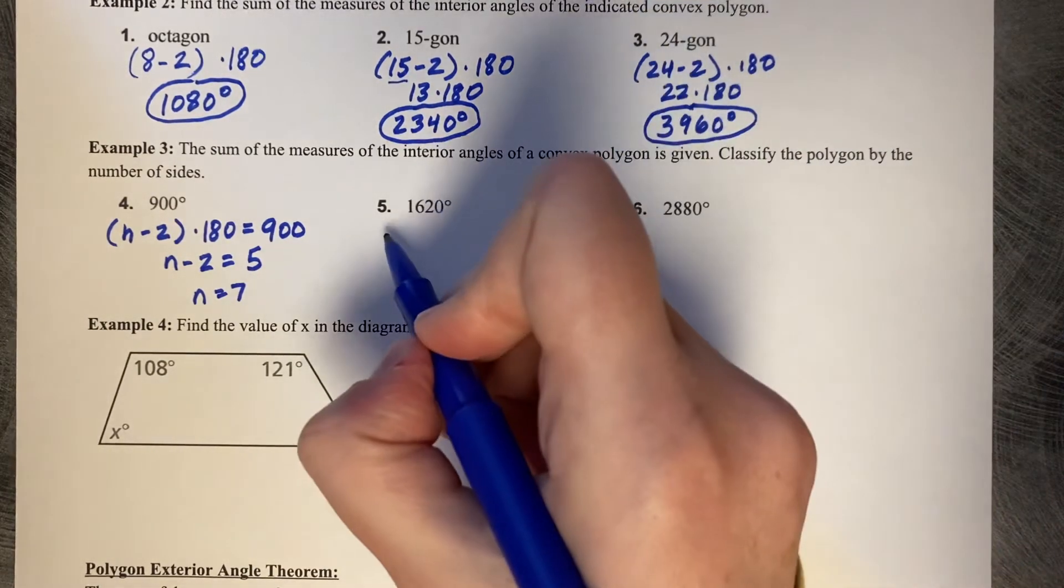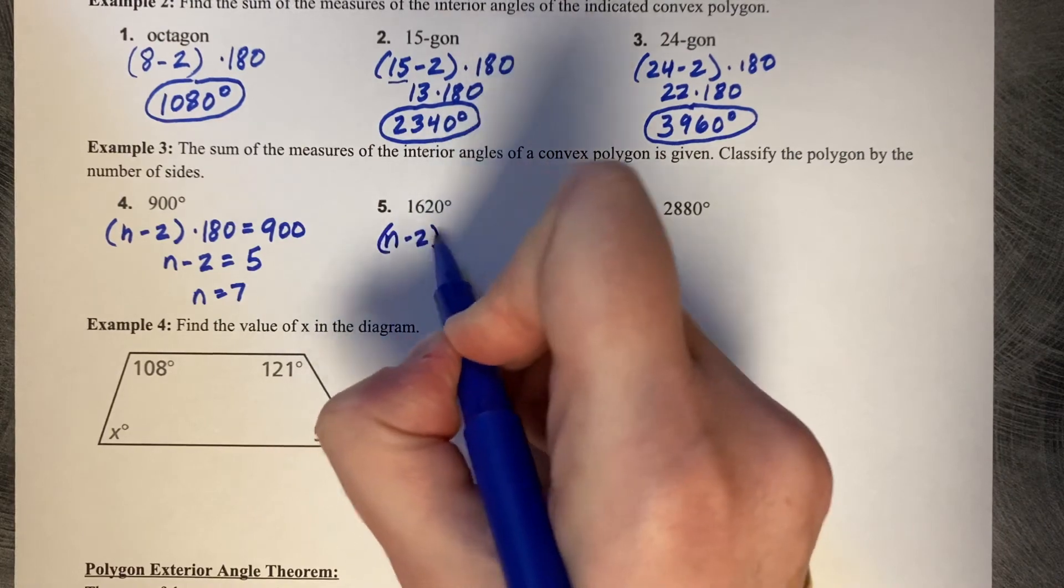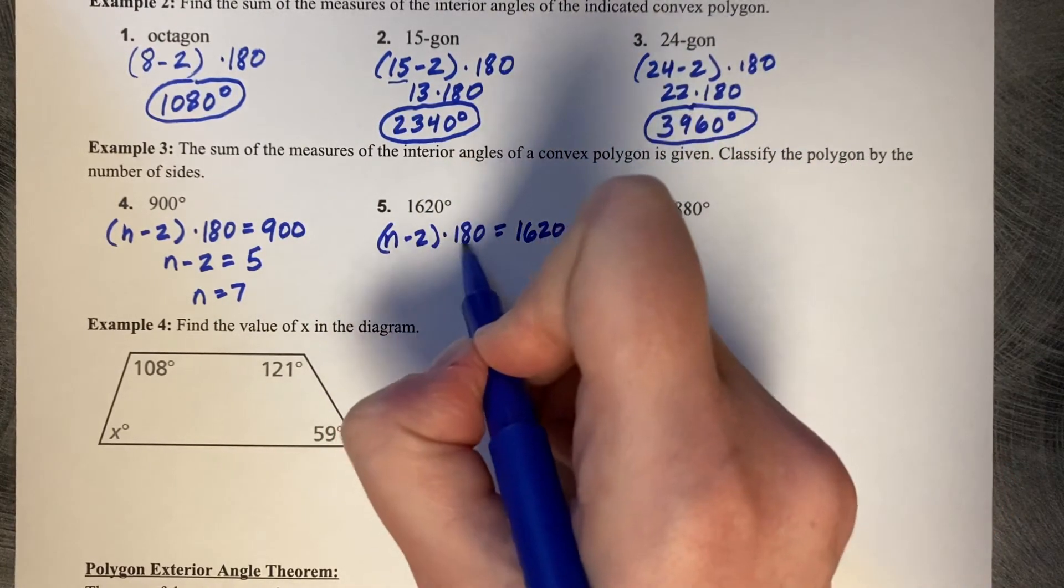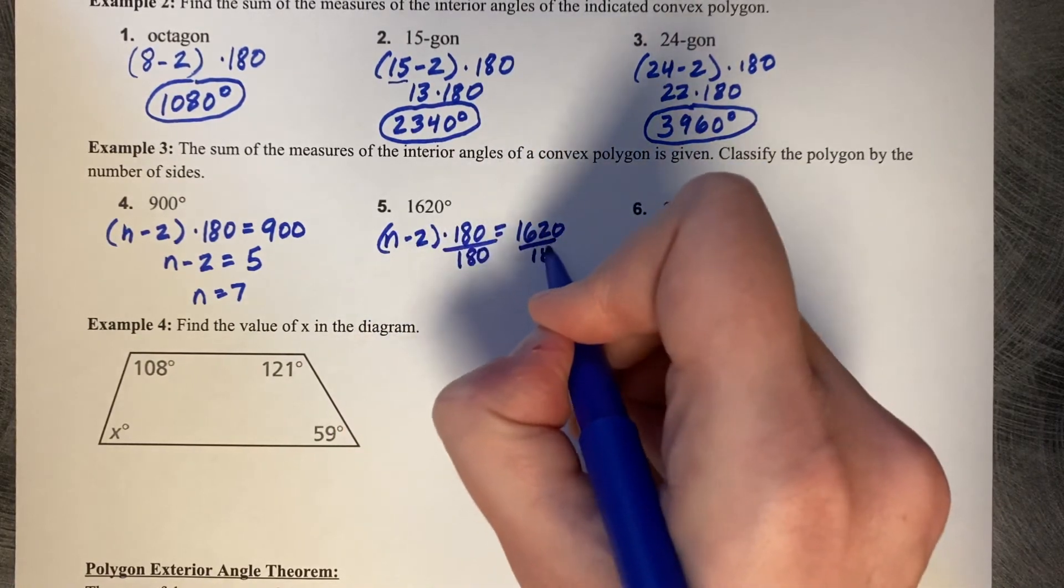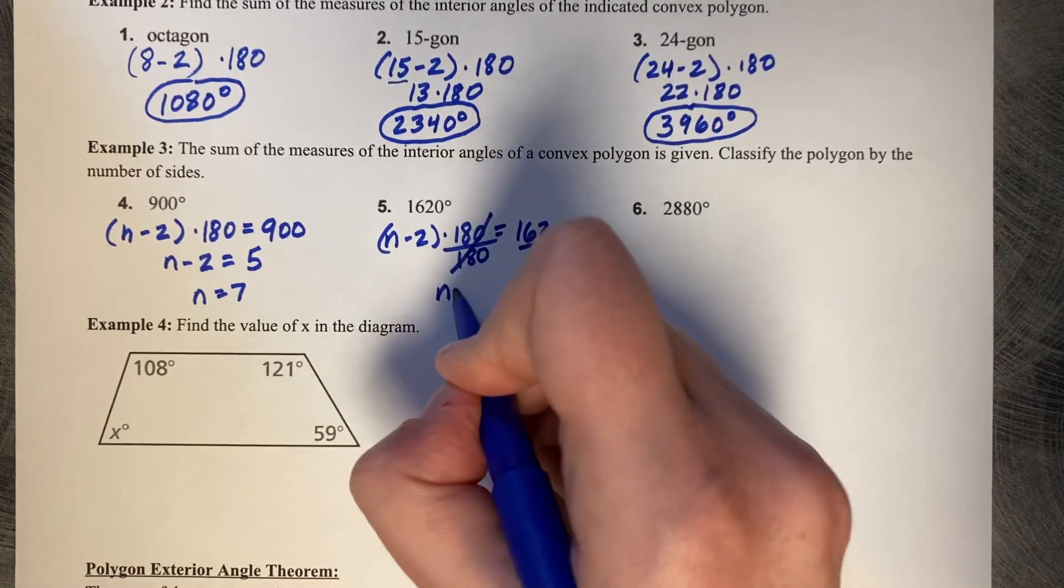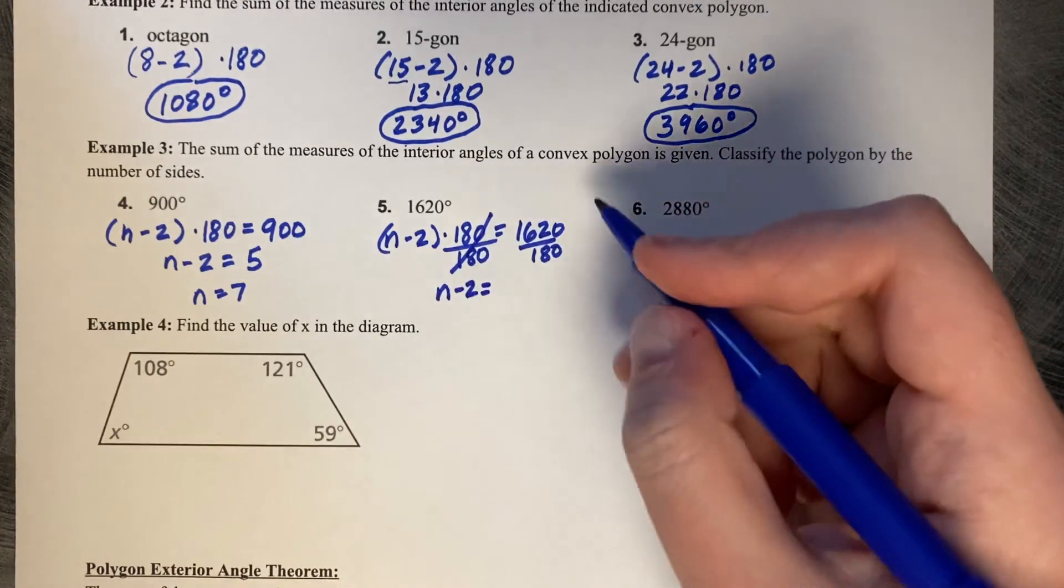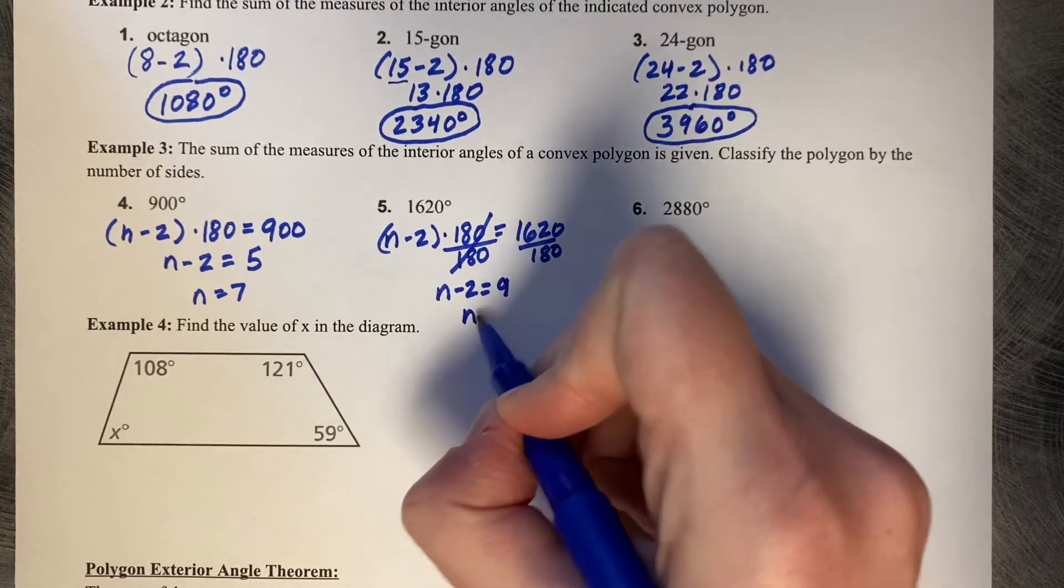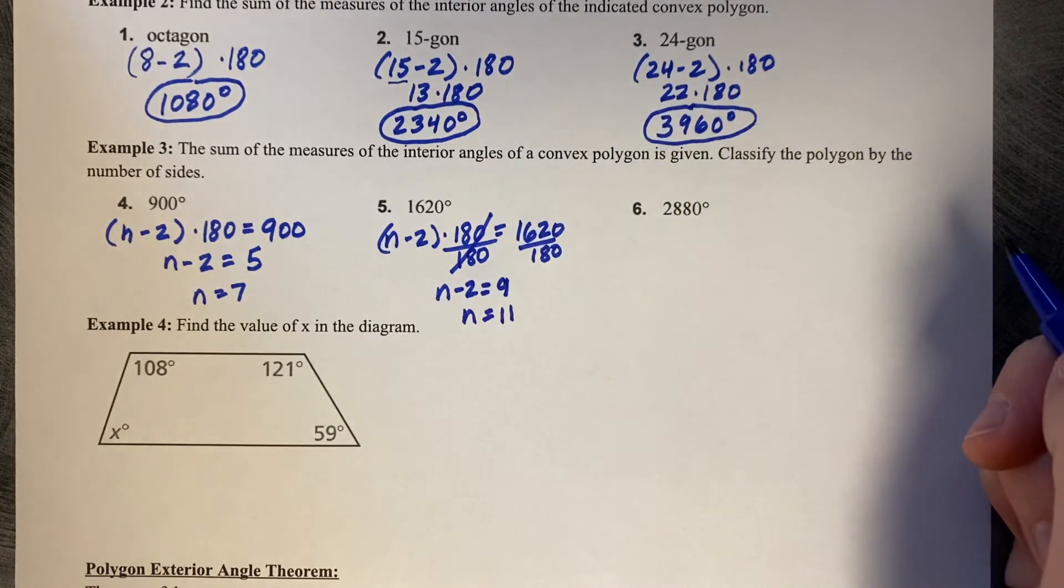Let's try another. n minus two times 180 equals 1620. Divided by 180, divided by 180. So then you get n minus two, 1620 divided by 180 is nine. Plus two, so n equals 11. A heptagon.